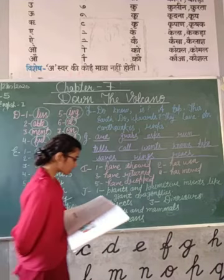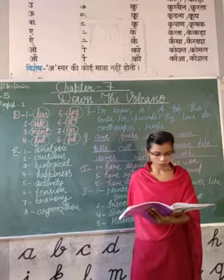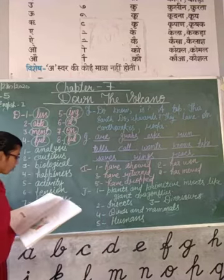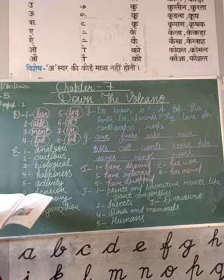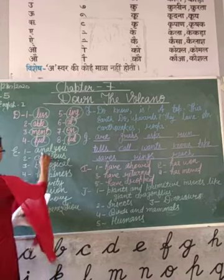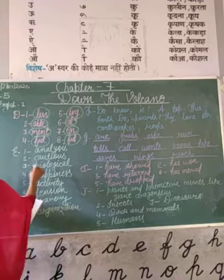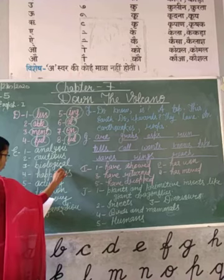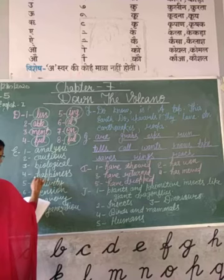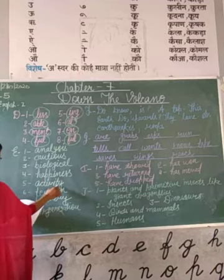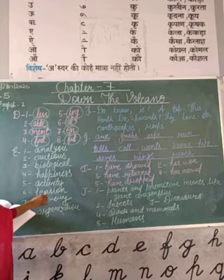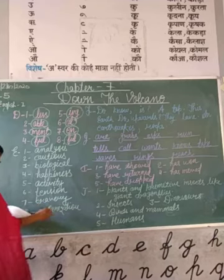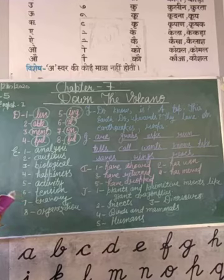Question Number E is: make complete words from these words and suffix. You can look up the new words in the dictionary to check if the spelling is correct. So: 'analyse' plus 'sis' becomes 'analysis' — A-N-A-L-Y-S-I-S. Second, 'portion' plus 'ous' becomes 'cautious.' Third, 'biology' plus 'ical' becomes 'biological.' Fourth, 'happy' plus 'ness' becomes 'happiness.' Fifth, 'active' plus 'ity' becomes 'activity.' Sixth, 'tense' plus 'ion' becomes 'tension.' Seventh, 'brave' plus 'ry' becomes 'bravery.' Eighth, 'organize' plus 'ation' becomes 'organization.' Now move to the next exercise.